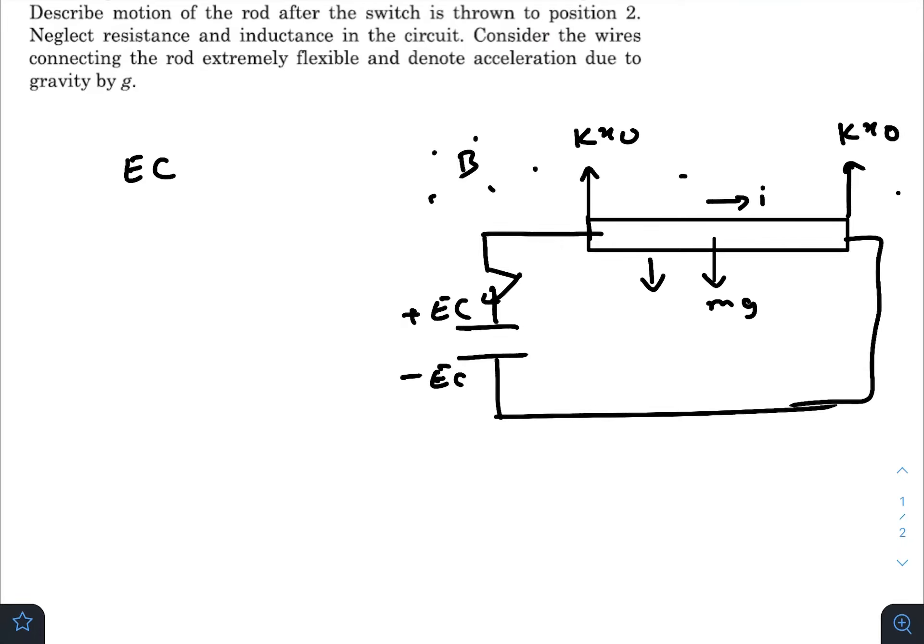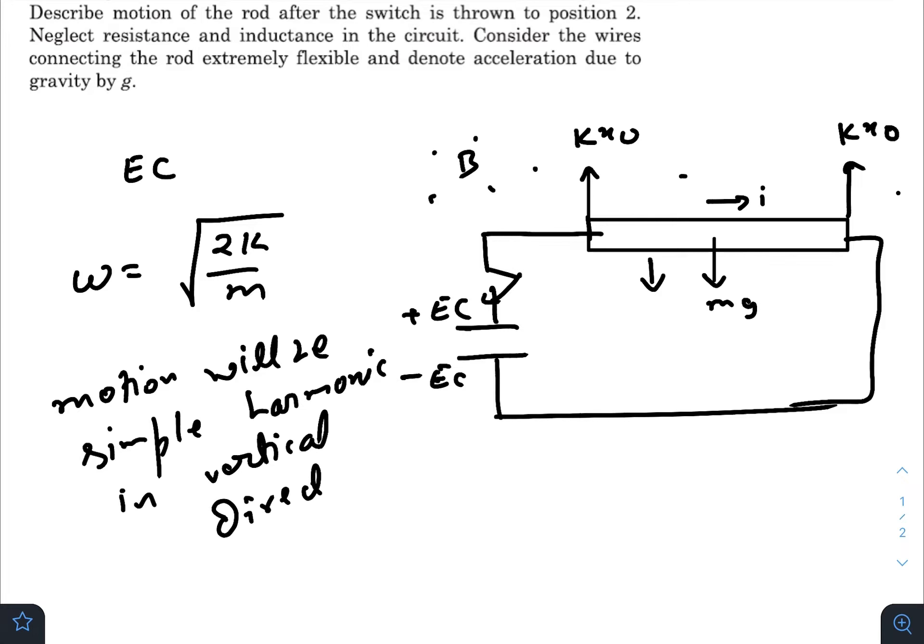It will start oscillating in a vertical way with an angular frequency of root over 2k by m, because as you can see the effective k is 2k here and the extra force mg is useless, because the spring will only create the required restoring force. The gravity is not responsible to change the angular frequency. After flow of this sudden amount of current, there will be a short impulsive force giving it a sudden increase in velocity. Motion will be simple harmonic in vertical direction.